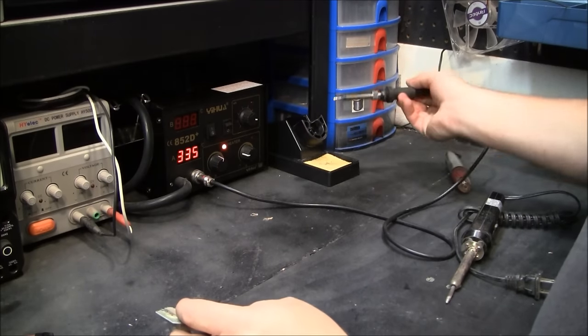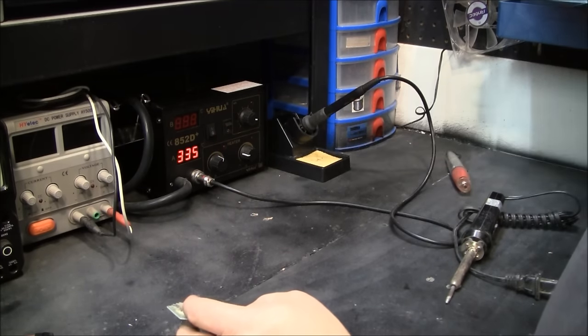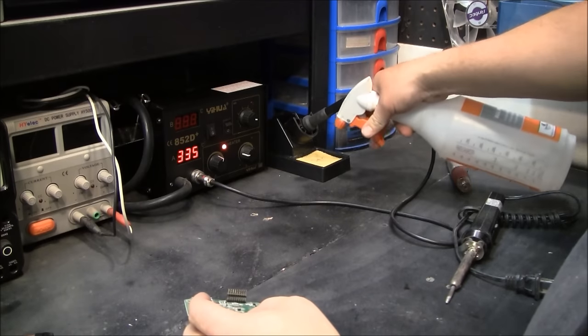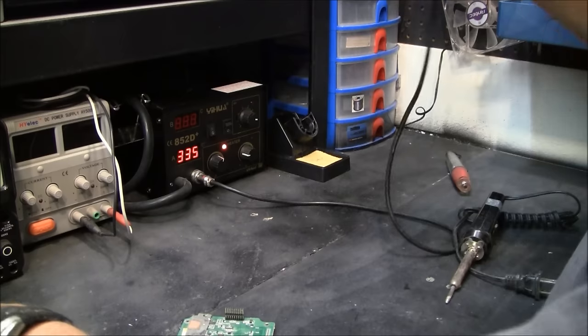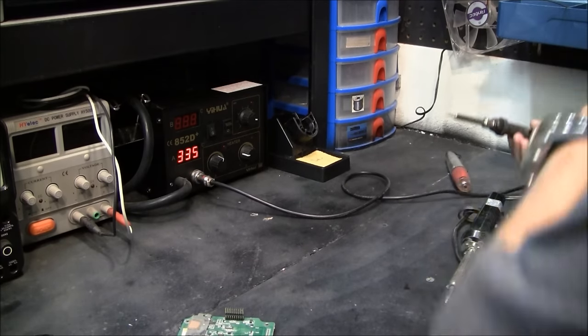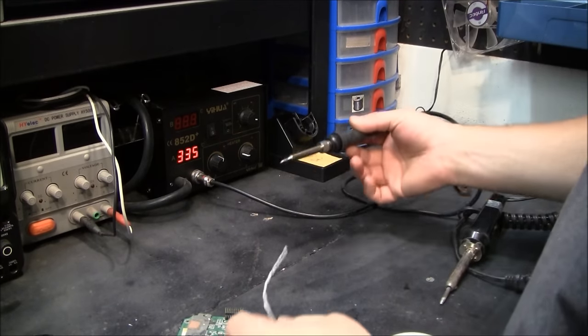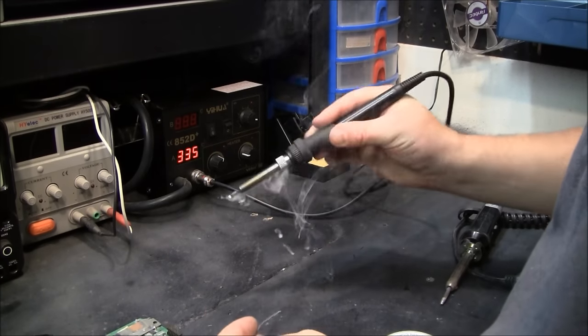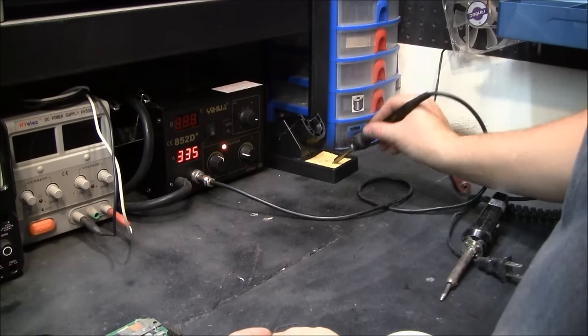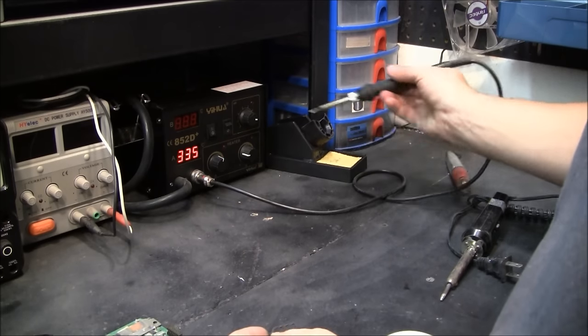I have a sponge here to clean my tip. I usually keep some water here so I can just get things wet. But you need to keep your tip clean. So before you start soldering you need to put some fresh solder on and go ahead and clean it off.